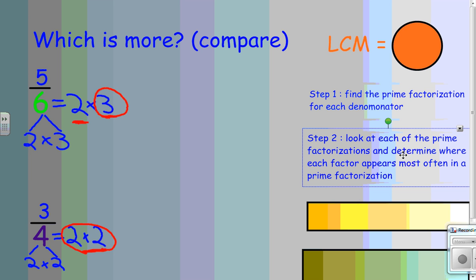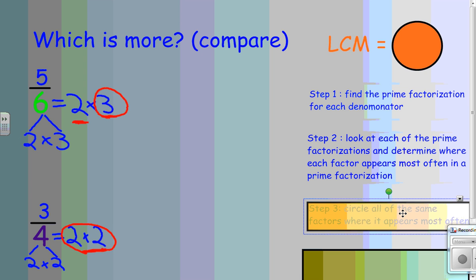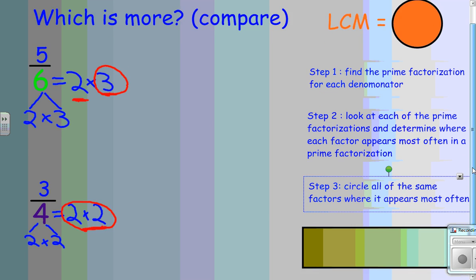Now, time to look at the next step. Step number three. We circled all the factors where it appeared most often.